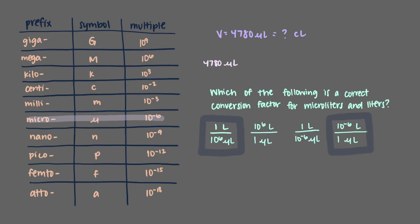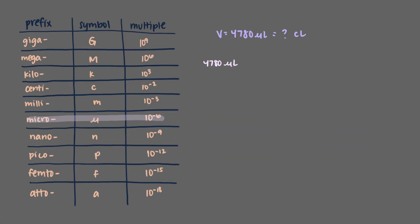Two of these are correct. One liter is equal to 10 to the sixth microliters. There are many small things, microliters, in one big thing, liter. But it is also true that one little thing, one microliter, is a small portion of one large thing, liter. Both of these are equivalent. So we multiply our 4780 microliters by one liter, one big thing, over 10 to the sixth microliters, many small things.